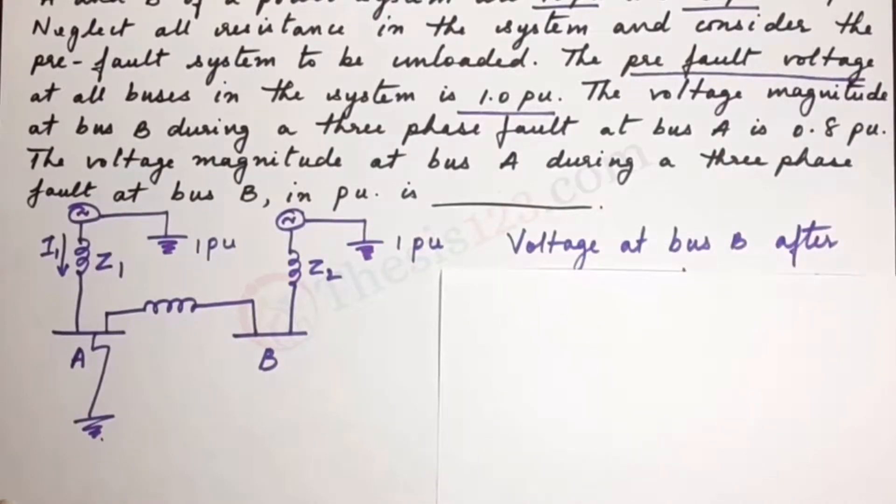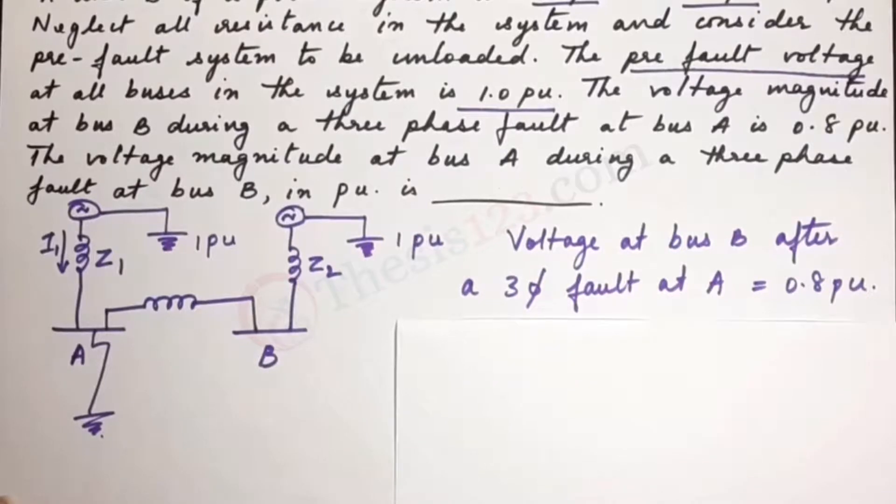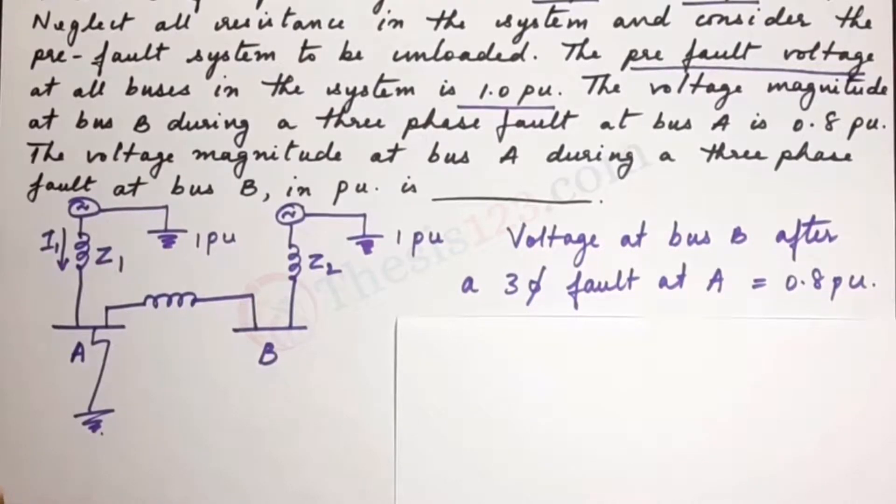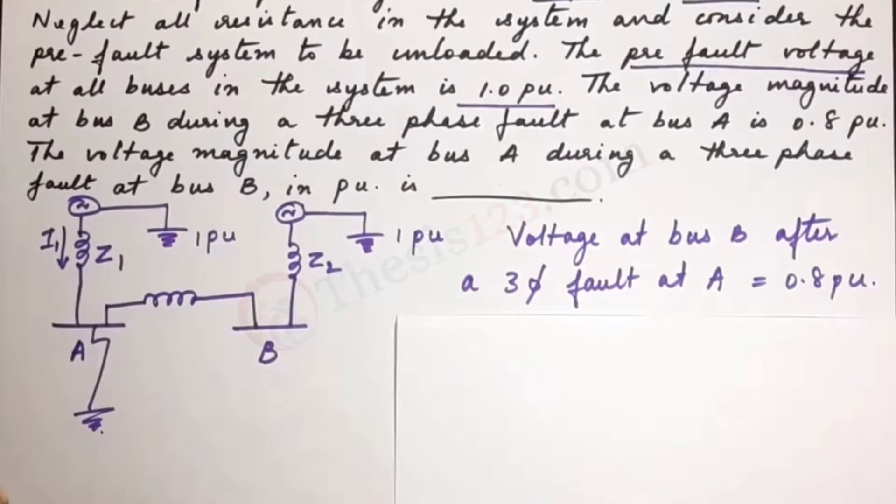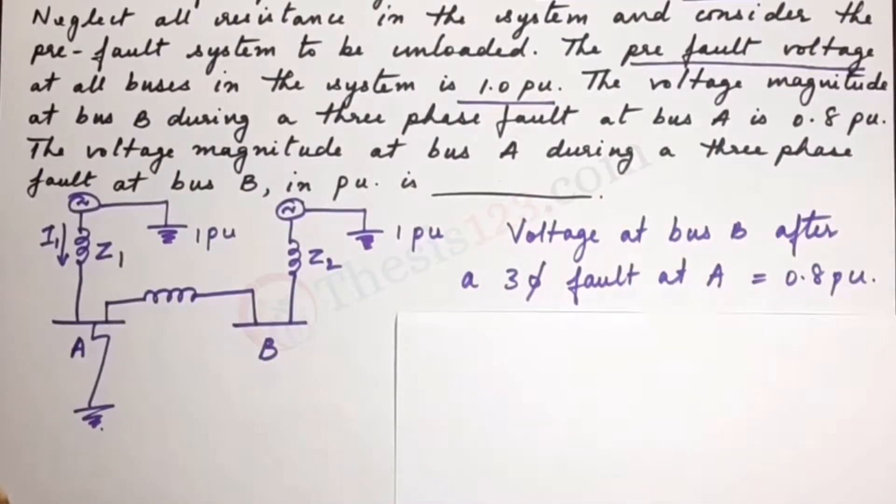We have the voltage at bus B after a three-phase fault at A is 0.8 given to us. So now let us find out what is the voltage at bus B. Let's call that VB.